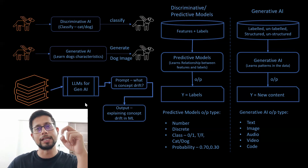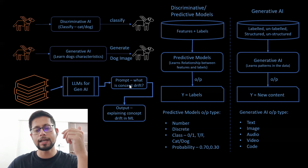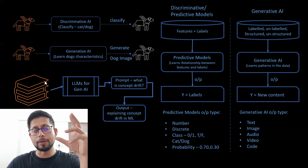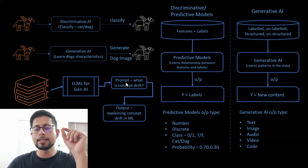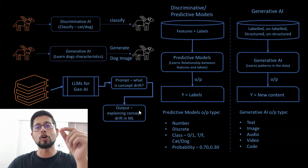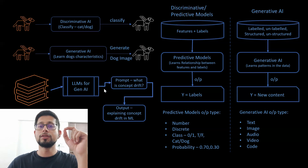Another example: we have books on mathematics or electronics, and we train a large language model on those topics. Then we ask a question like 'what is concept drift?' If the model is trained on machine learning and AI topics, it can easily explain what concept drift is, provide examples, and even discuss its importance — all as text output.